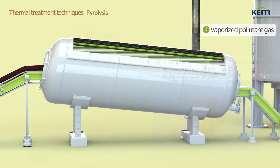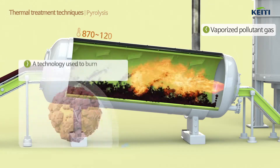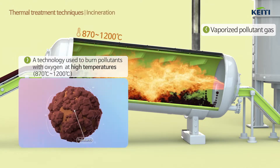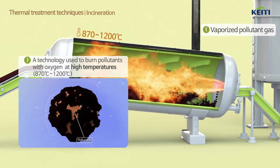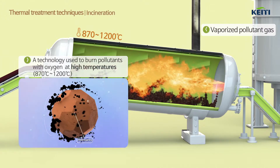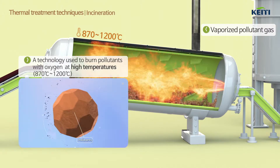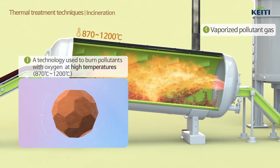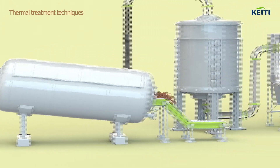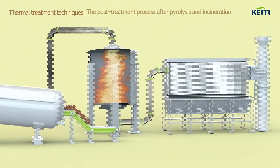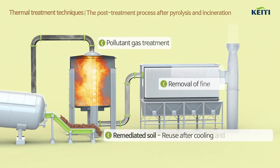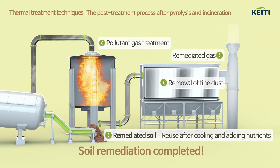Incineration treats the contaminated soil by applying heat at 870 to 1200 degrees Celsius to burn the contaminants with oxygen. The soil remediated by pyrolysis and incineration can be reused after cooling and adding nutrients.